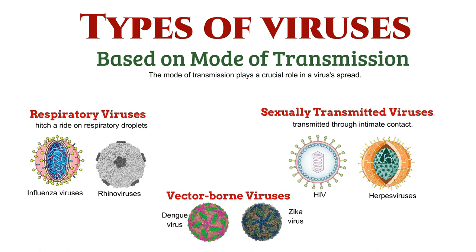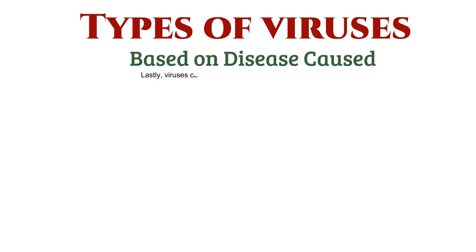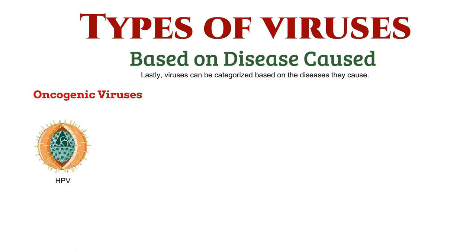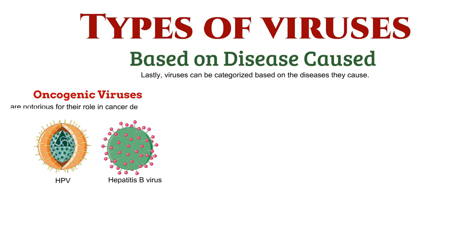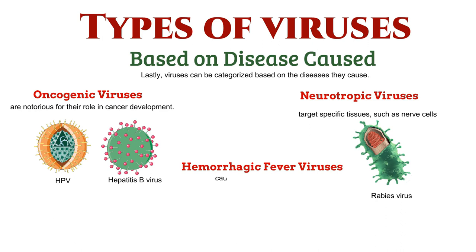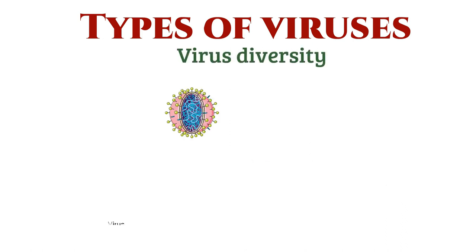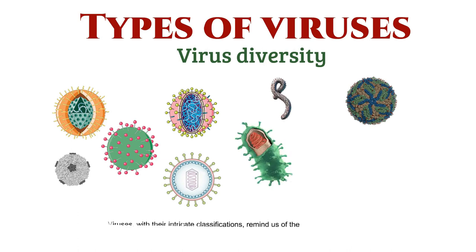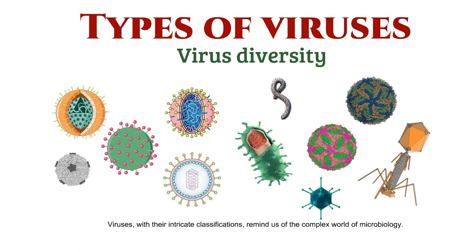Vector-borne viruses, such as dengue virus and Zika virus, rely on vectors like mosquitoes for transmission. Lastly, viruses can be categorized based on the diseases they cause. Some viruses, like HPV and hepatitis B virus, are notorious for their role in cancer development. Others target specific tissues, such as nerve cells with viruses like rabies virus, or cause severe symptoms like bleeding and organ failure with viruses like Ebola virus and dengue virus. Keep in mind that viruses can often overlap categories, and some may not fit neatly into one specific classification.